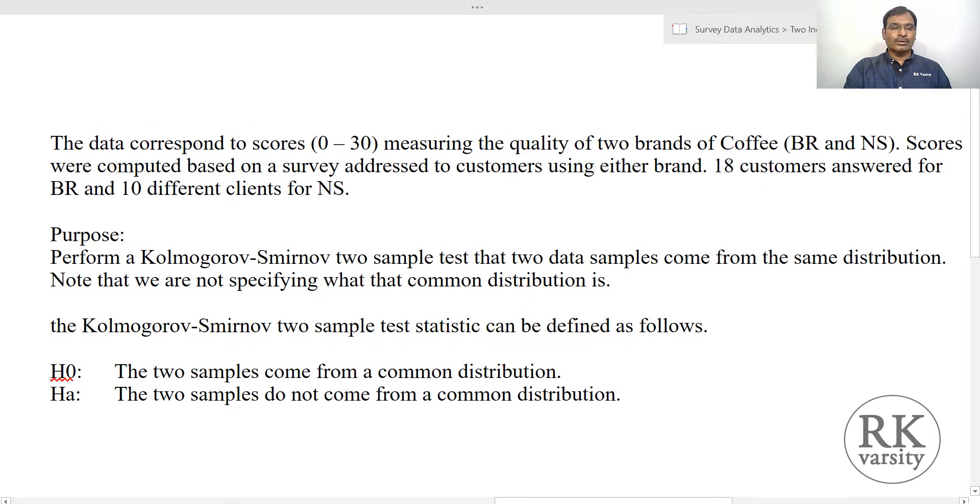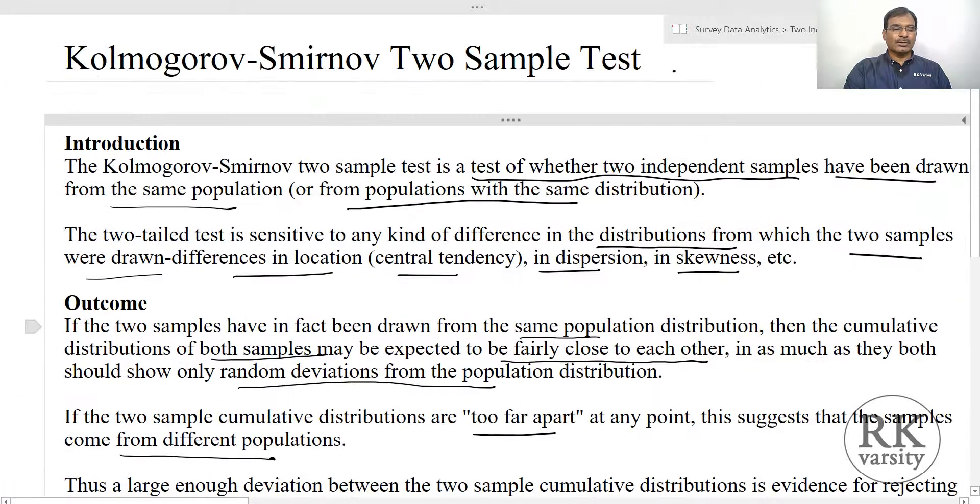This is how you need to calculate the Kolmogorov-Smirnov two-sample test for independent groups using IBM SPSS—two different procedures to test the hypothesis. Thank you for listening to the lecture.